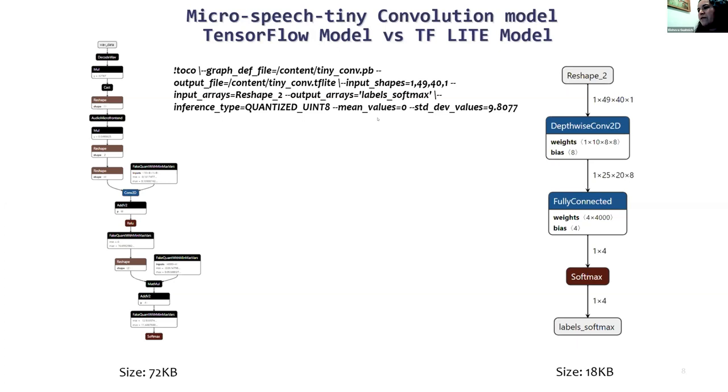In this example, the labels are yes, no, background, and null. This is the command for running the TOCO tool that converts the model to TensorFlow Lite.